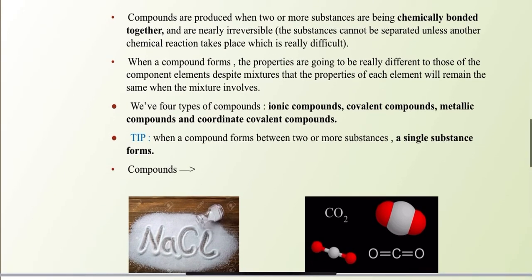And now, compounds. Compounds are produced when two or more substances are being chemically bonded together and are nearly irreversible. The substances cannot be separated easily unless another chemical reaction takes place, which is really difficult — or let's say, nearly impossible. When a compound forms, the properties are going to be really different from those of the component elements. However, in mixtures, the properties of each element will remain the same, will remain constant.